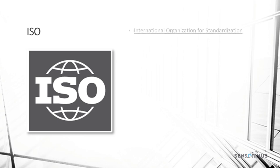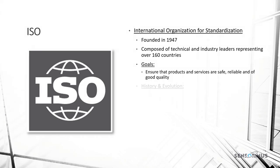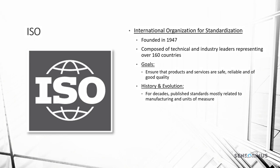The International Organization for Standardization was founded in 1947. It's composed of technical and industry leaders representing over 160 countries. Their primary goals were to ensure that products and services are safe, reliable, and of good quality. For decades they published standards mostly related to manufacturing and units of measure. But in 1987, their first publication of a quality management standard, ISO 9001, became a seminal standard that affects companies to this day on the manufacturing process and quality of products they create.